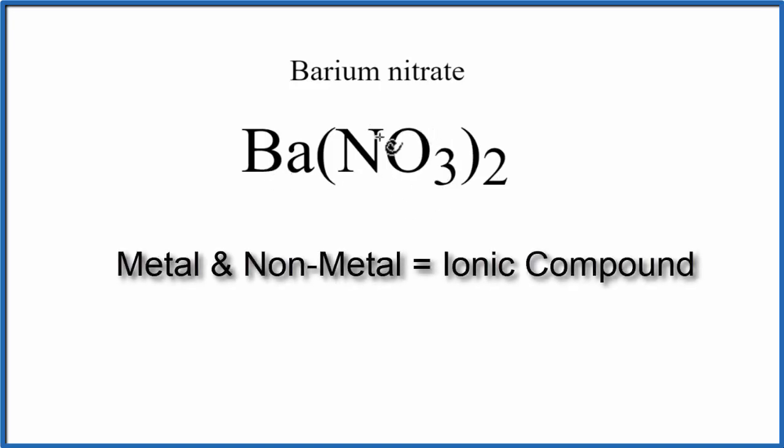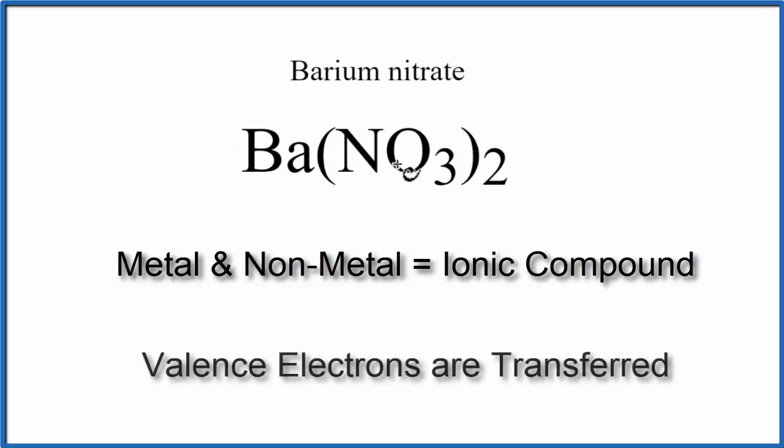When we have a metal and non-metals, we have an ionic compound. That means that the metal will transfer electrons to the non-metals.